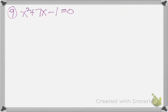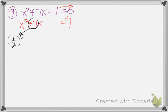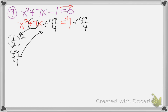Same thing — solve by completing the square. Jump the constant over so we get x squared plus 7x equals positive 1. Now find the completing number: take that 7, put it over 2 squared. This time you can't divide 7 by 2 cleanly, so square the fraction: 7 squared is 49, 2 squared is 4. The completing number is 49 fourths. Add 49 fourths to both sides — whatever you do to one side, you do to the other to keep balance.